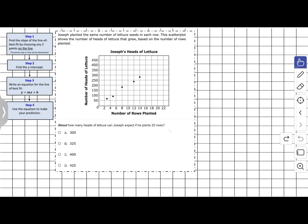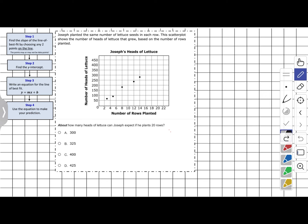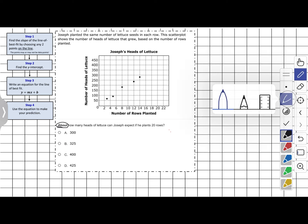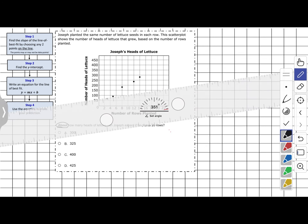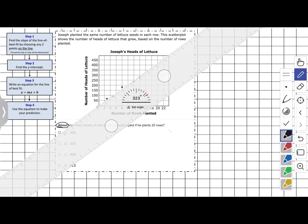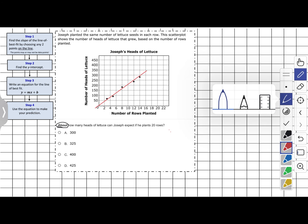The question asks about how many heads of lettuce Joseph can expect if he plants 20 rows. The word 'about' tells us the answer will be close to one of the choices. Before solving, we need a line of best fit, so using a ruler I draw it. I end up with two points above and three below — that's still a good line of best fit because it's almost even.